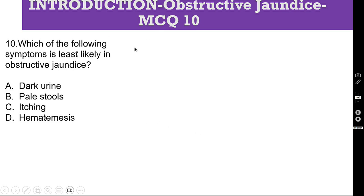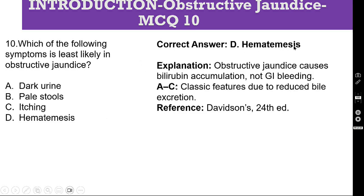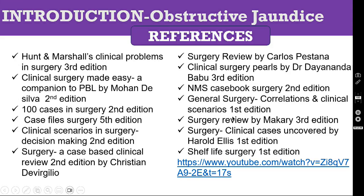MCQ number 10: Which of the following symptoms is least likely in obstructive jaundice? A. Dark urine, B. Pale stool, C. Itching, D. Hematemesis. The correct answer is D — hematemesis — because apart from hematemesis, all three other options can present in obstructive jaundice. Obstructive jaundice causes bilirubin accumulation, not GI bleeding. Dark urine, pale stool, and itching are classic features due to reduced bile excretion. Reference: Davidson's 24th edition.